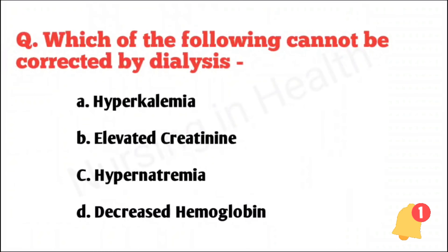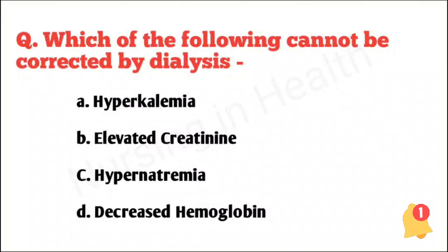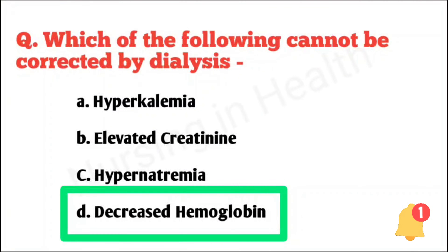Which of the following cannot be corrected by dialysis? Hyperkalemia, elevated creatinine, hypernatremia, or decreased hemoglobin. Right answer option D: decreased hemoglobin.